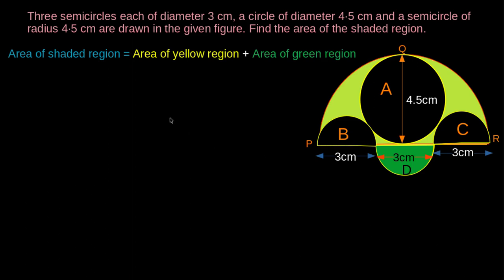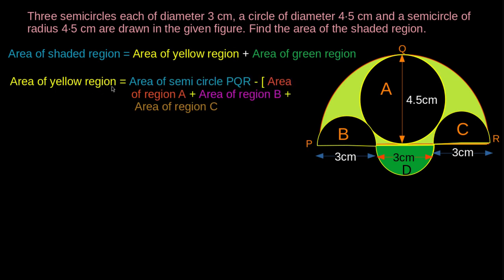The area of the shaded region is equal to the area of the yellow color region plus the area of the green region. The area of the yellow region is given by the sum of areas of region A, region B, and region C, minus the area of semicircle PQR.